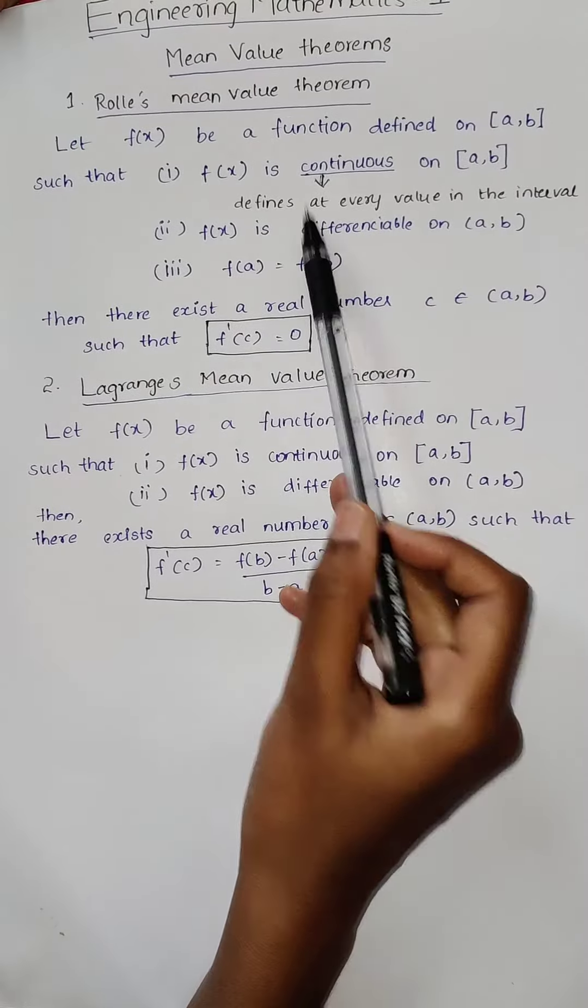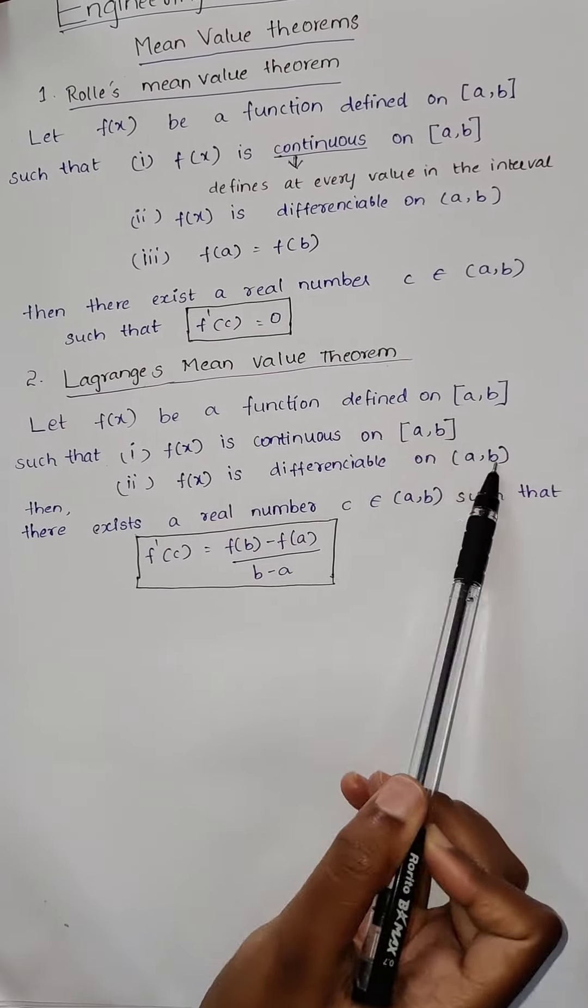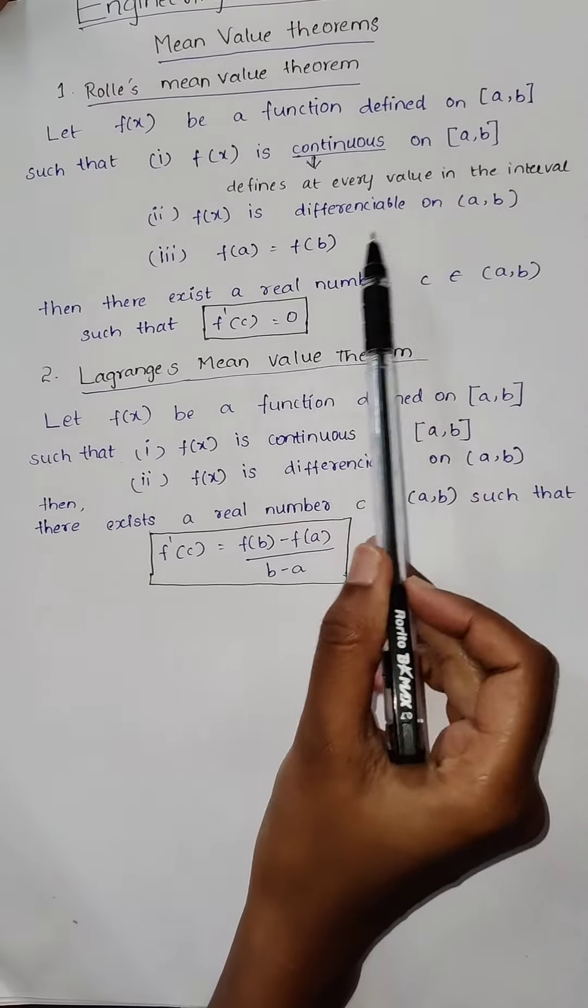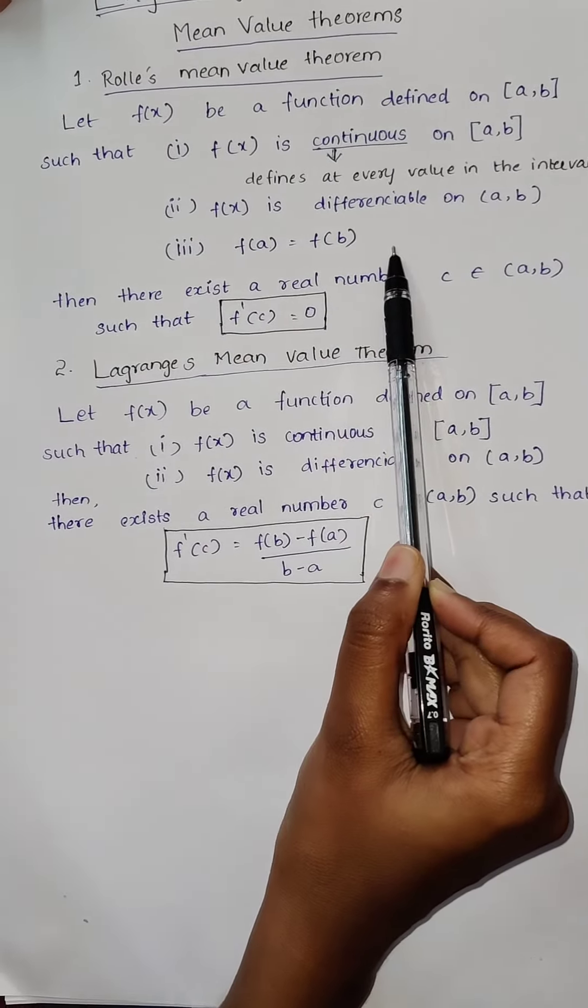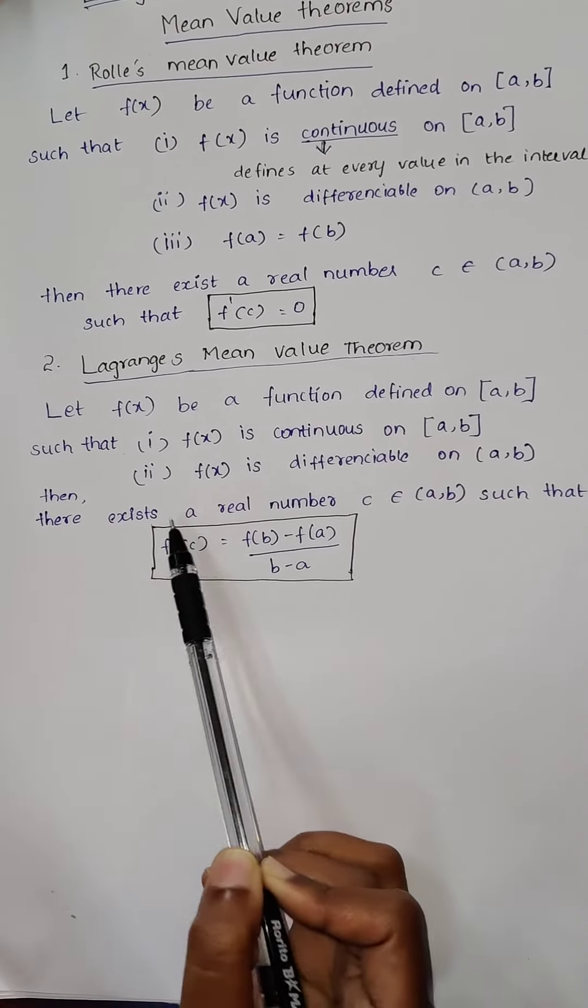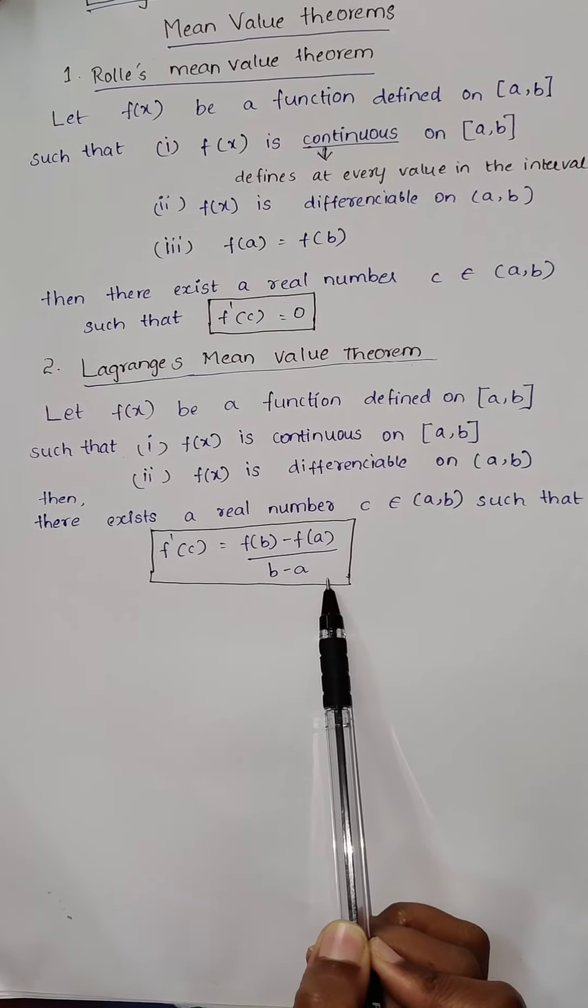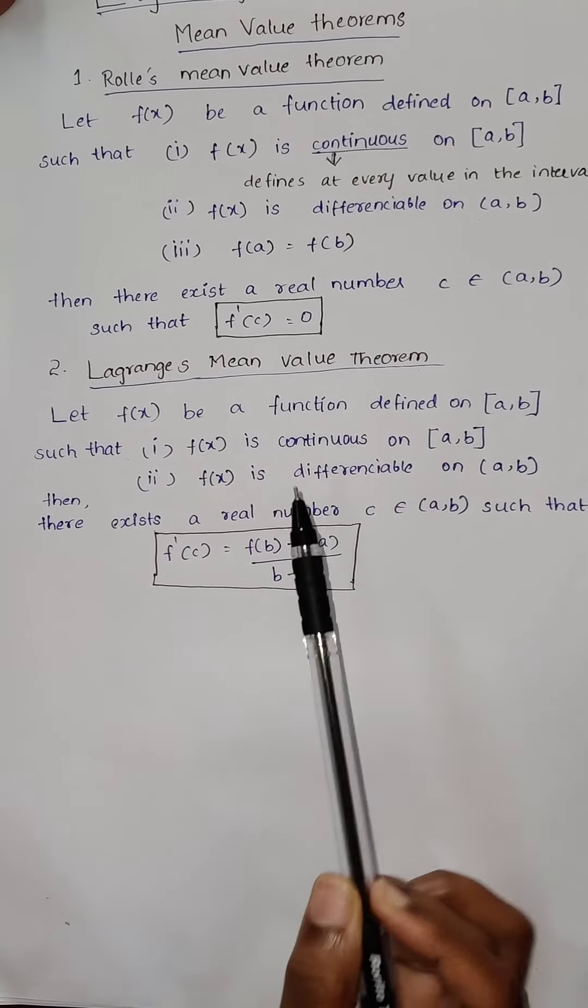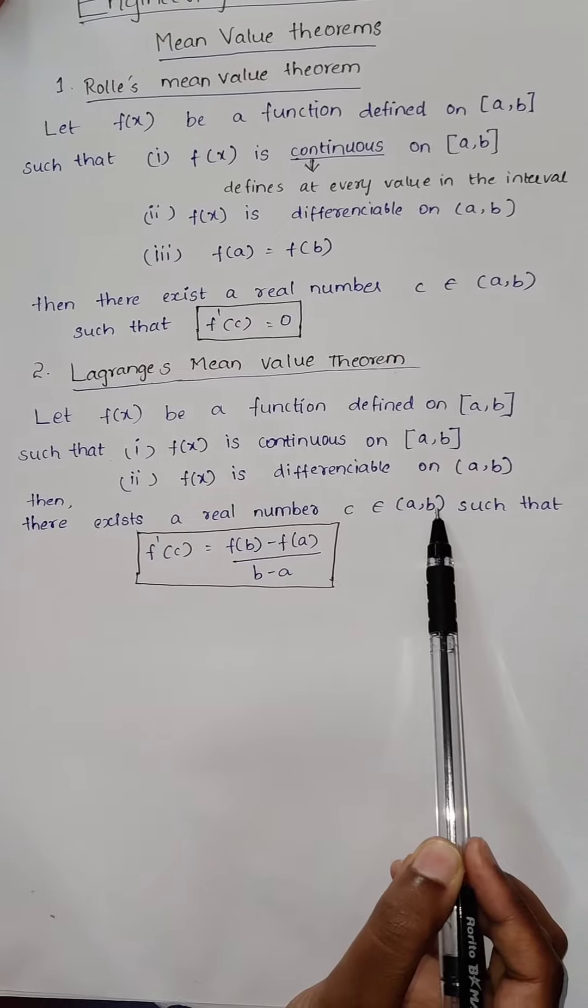That means, if you learn one, you can do it easily. If both conditions are satisfied, then there is an extra condition in Rolle's mean value theorem that is f of a is equal to f of b. But here, no such condition is there. f dash of c is f of b minus f of a by b minus a. We will find c by using this condition. Then, this c will be belonging to open interval a comma b.